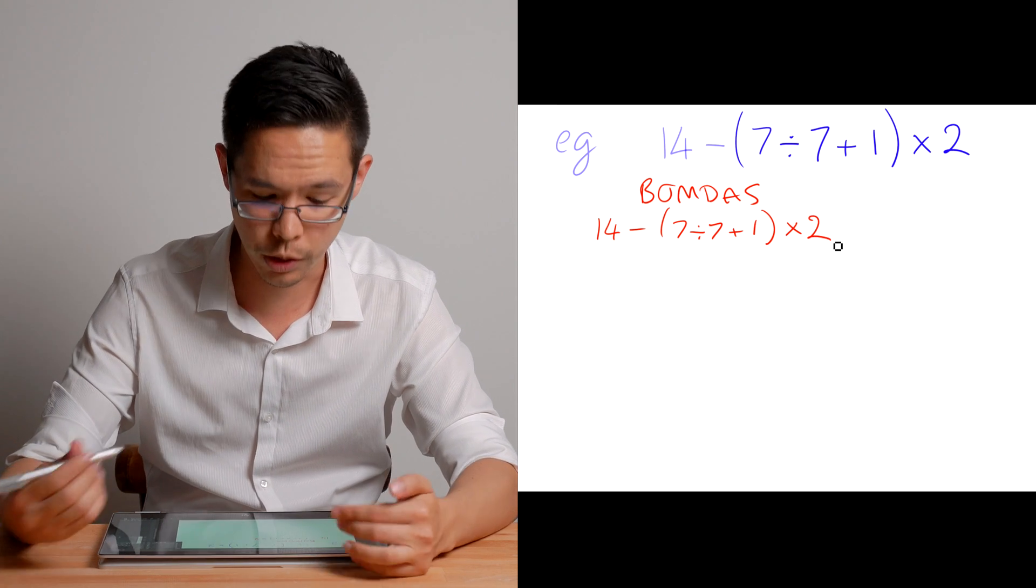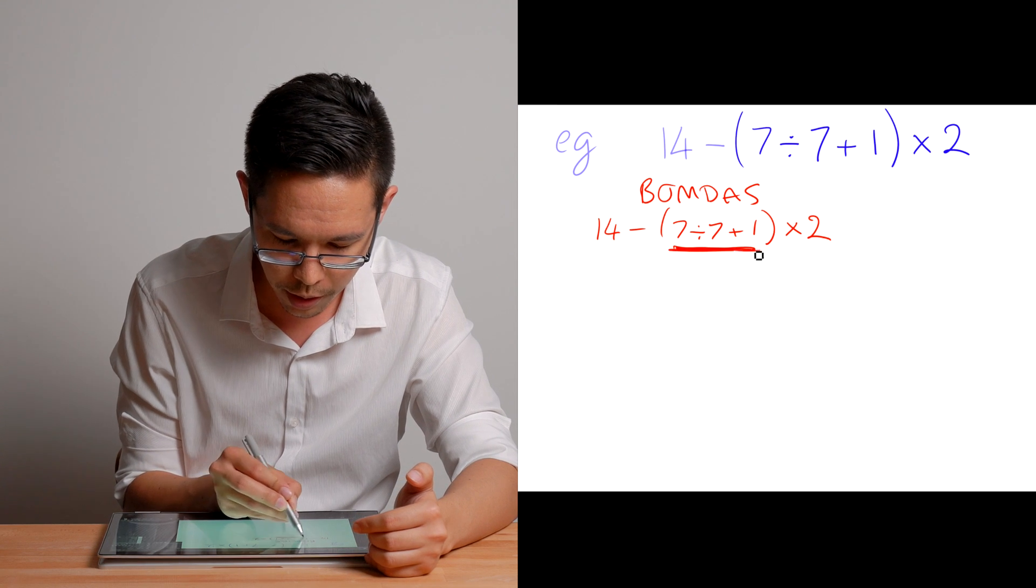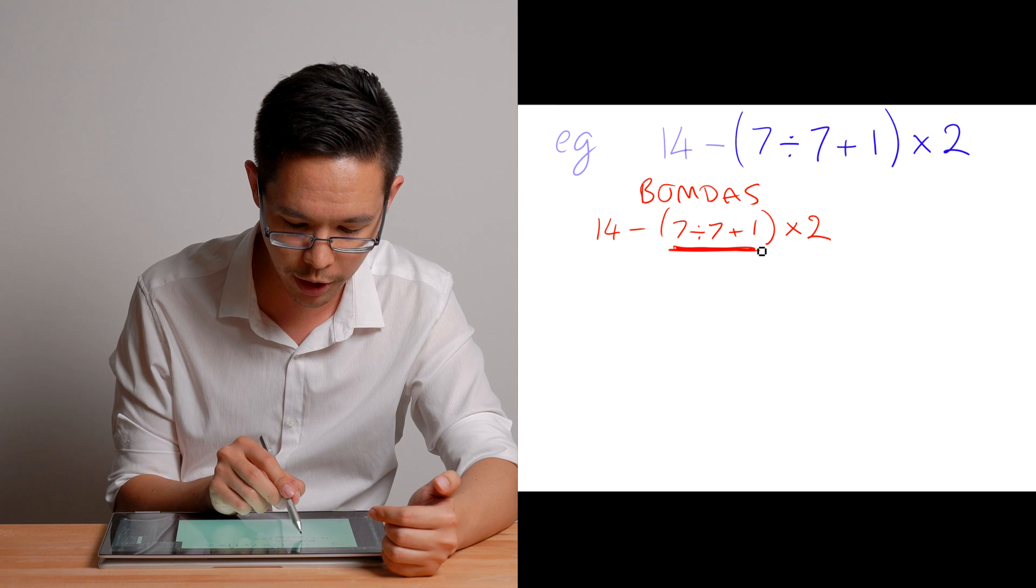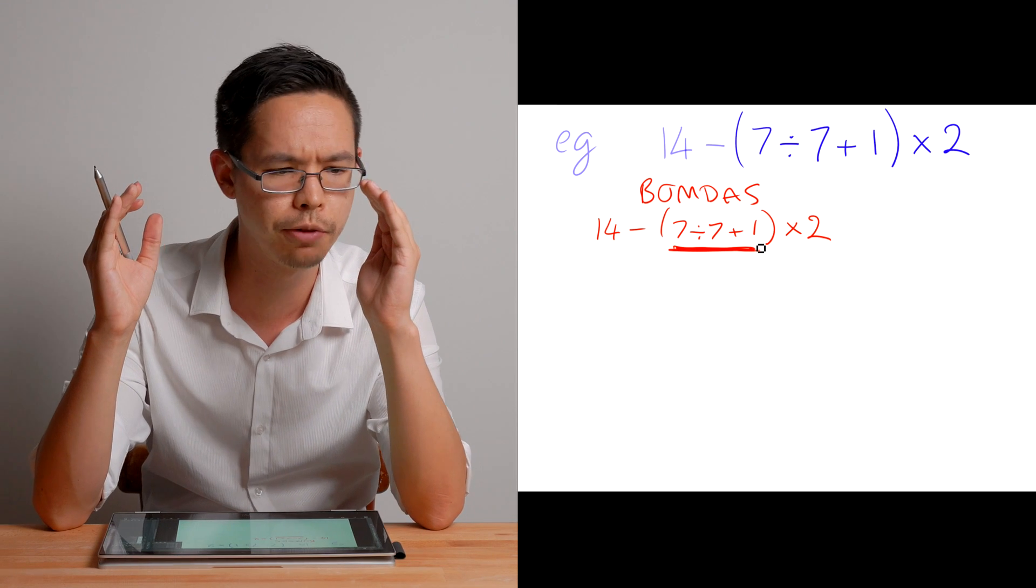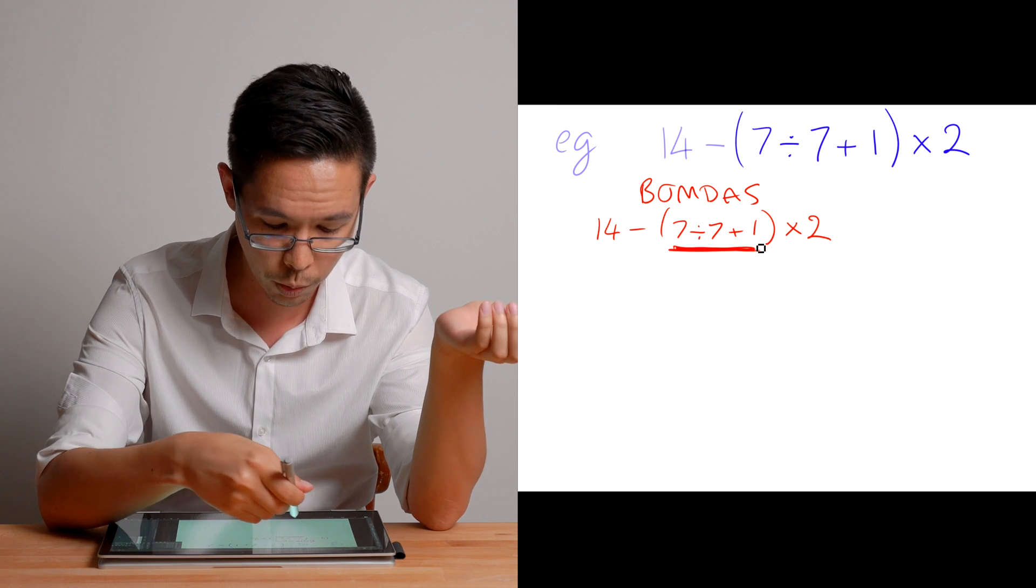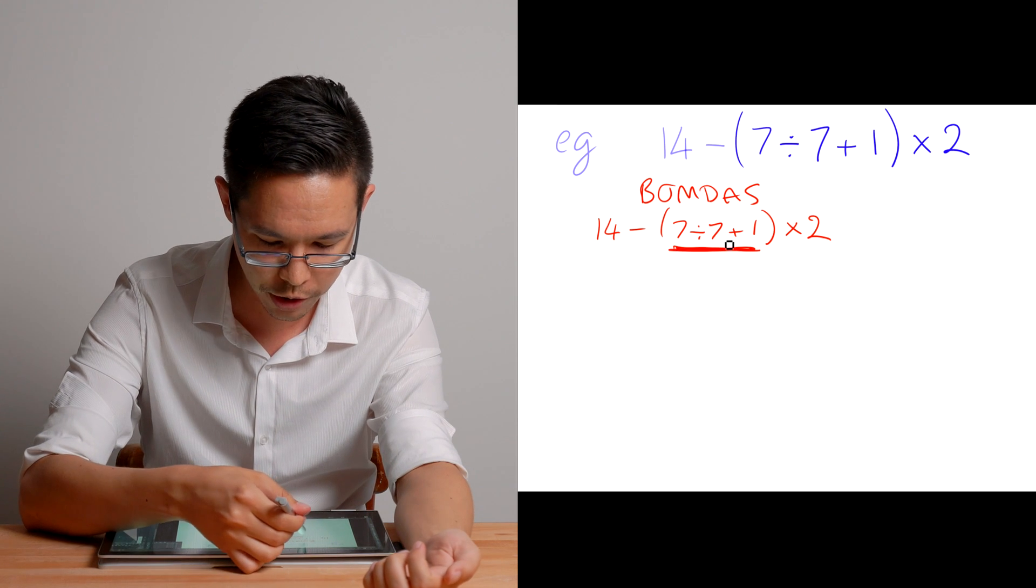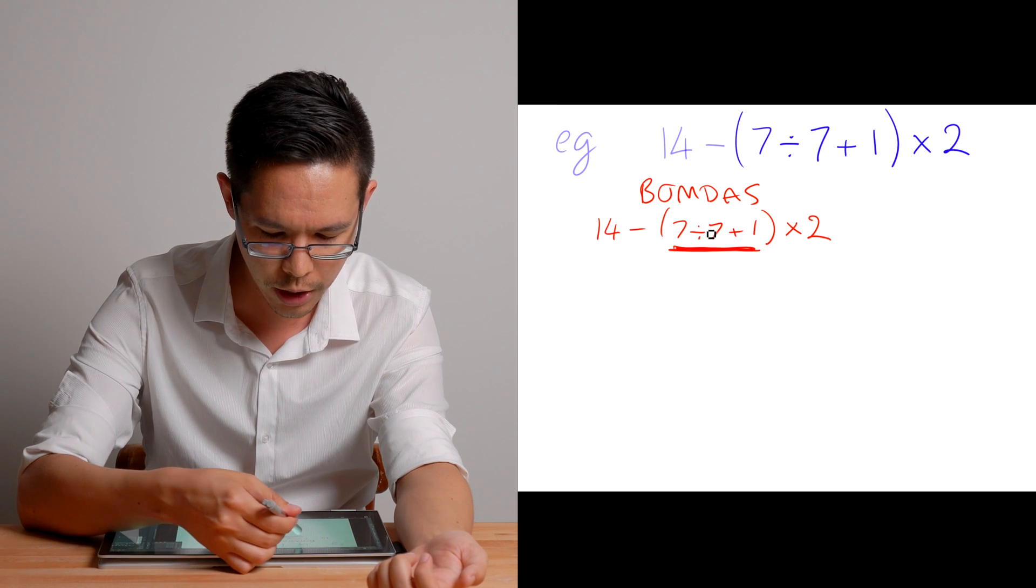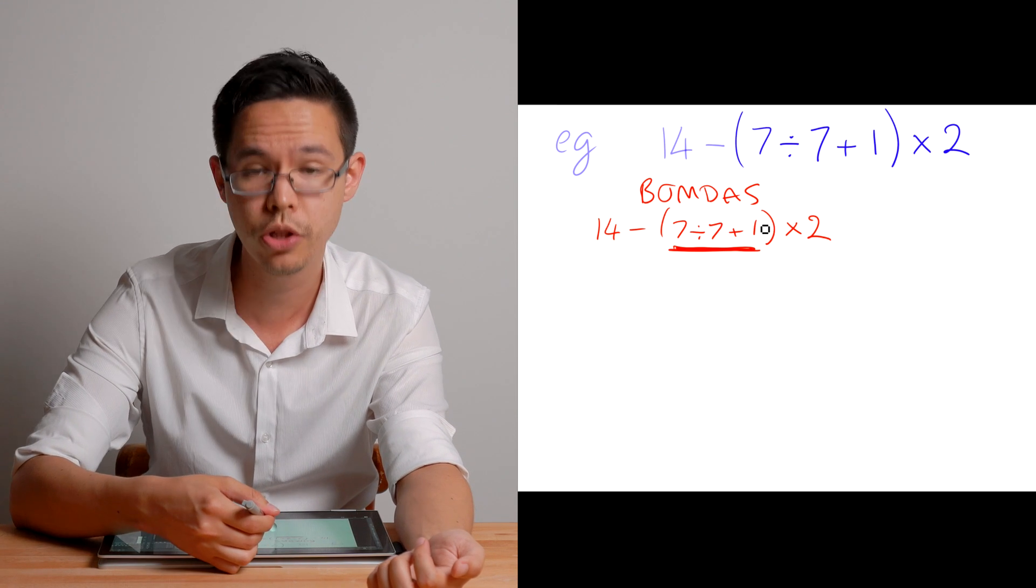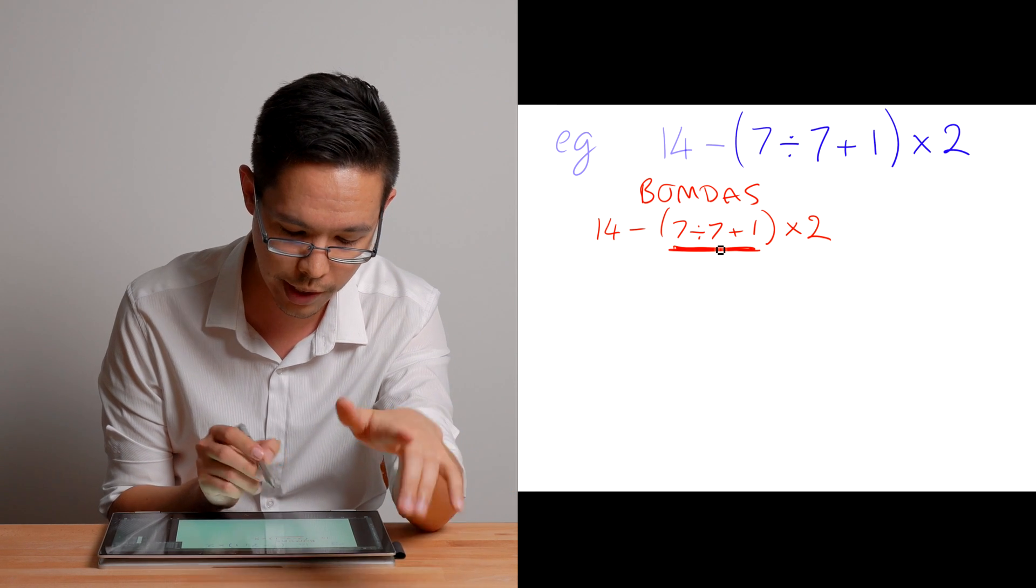So I'm going to write down my rule BOMDAS. So I'm also going to copy down the question again. So 14 minus open bracket seven divided by seven plus one close bracket times two. So what do we start with first? Well, B, B stands for brackets. So we've got to deal with this whole middle section first. So to do with that, I've got to figure out what within my brackets should I do first? Do I do the dividing sign or do I do the plus sign? So what does the rule tell me? So within the bracket, I sort of go through the order of operations one more time. So I'm now just focusing my attention on the inside here. Do I have any more brackets? No. Do I have any orders? No. Do I have any multiplication? No. Do I have any division? Yes, I actually do. So I should do the seven divided by seven. I should do that thing first.